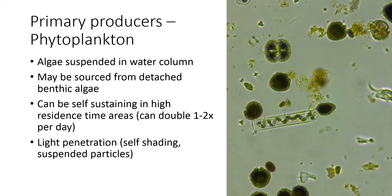Less common in streams as a major component of the algal community are the phytoplankton — that's not to say they're not present, but in smaller streams, as we talked about with the river continuum concept, they're not going to be making up a major component of the food resources available. As we get to bigger and bigger streams, where there's less surface area and more water area, phytoplankton become more common. In the early days, people thought phytoplankton might not be able to sustain themselves in large river systems, but it seems that because there's enough water retention time, and algal production can be really high — a doubling of cell count like one to two times per day — depending on how long it takes water to get from point A to point B, you can have your algae community be self-sustaining.